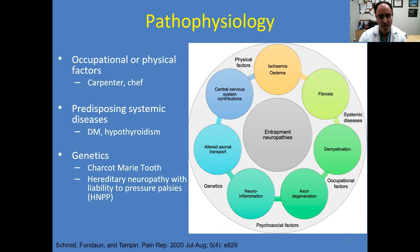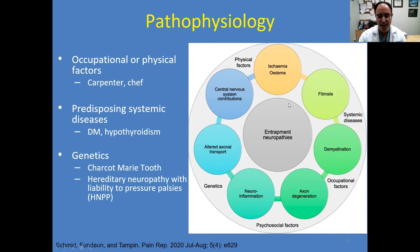There are also other factors visible here. There are occupational factors — for example, a chef who spent all day supinating and pronating his wrist may have a predisposition to entrapping the median nerve more proximally. We also think about systemic diseases such as diabetes and hypothyroidism, as well as genetic causes including Charcot-Marie-Tooth and hereditary neuropathy with liability to pressure palsies. So the pathophysiology is complex and multifaceted.